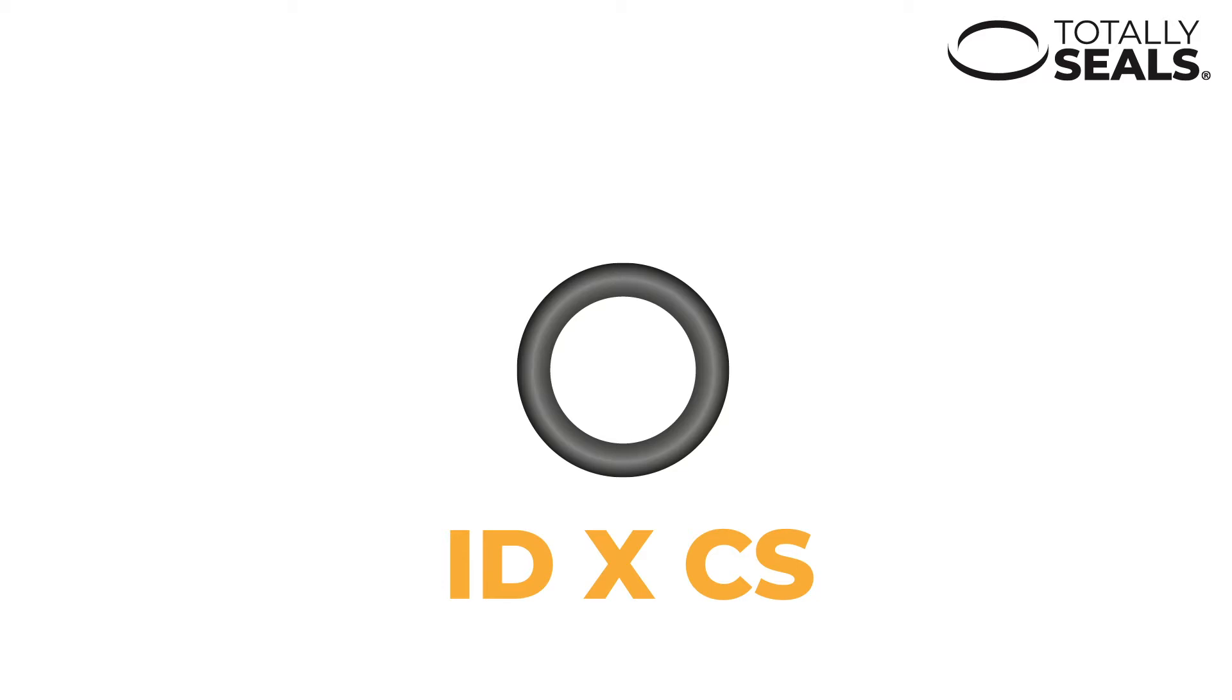In some cases, it is important to know the outer dimension of an O-ring. To find this, you simply add the inner dimension to two times the cross section. So in the case of the 10x2, it would be 10 plus 2 plus 2, giving an outer dimension of 14mm.